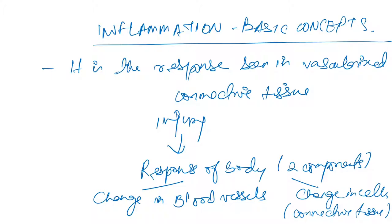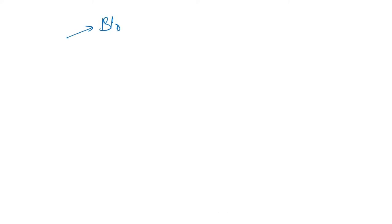When you have injury, the body responds with change in blood vessels and change in the cells — that is the connective tissue. The response is usually protective but sometimes harmful.